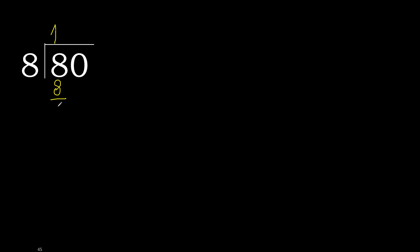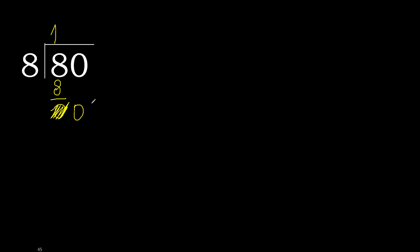8 minus 8 equals 0. Next, bring down the 0 on this side. 0 is less, therefore next. That is not a number, therefore finish it — finish it with this 0.